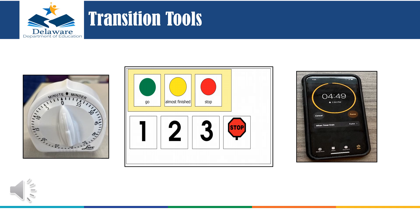Visuals and auditory warnings help to promote smooth transitions by communicating to your child that something is ending and beginning. They provide warnings of upcoming changes and may include verbal cues, auditory cues, timers, or countdowns. The first example on the left is an egg or cooking timer that will visually decrease and ding upon completion. The middle example is a visual in which velcroed numbers or colors go from green to red to show the transition is nearing. The example on the right is a digital timer on a phone that provides both a visual cue and an auditory alert.